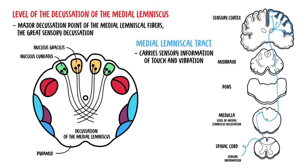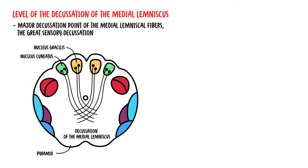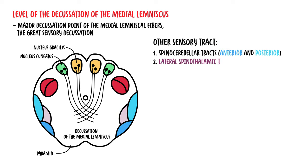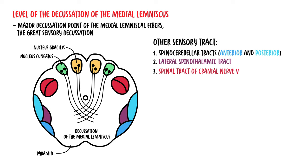Decussation means the nerve fibers moving from one side of the body to the other — from the right side to the left side. Other sensory tracts at this level include the spinal cerebellar tract, the lateral spinothalamic tract, and the spinal tract for cranial nerve five. We also have the motor tract at this level, because the motor fibers are traveling within the pyramids but will decussate in the level below.